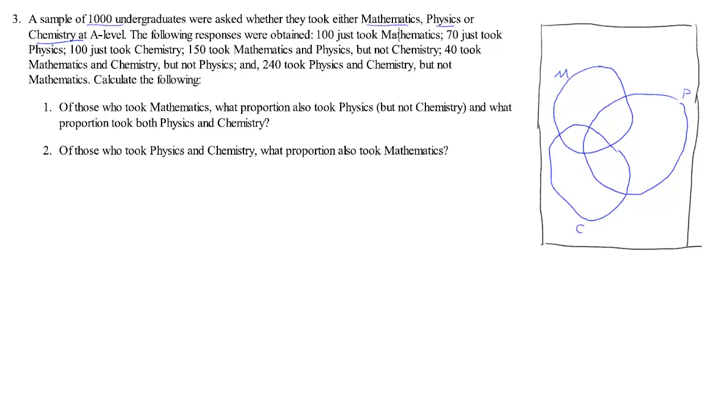And then let's put in a few numbers. So we know overall there were a thousand students and a hundred of those just took maths. The important thing here is that just, that is not a hundred took maths out of a thousand, but a hundred took maths but no physics and no chemistry. So here in our Venn diagram that 100 goes in here. Seventy just took physics. So this is 70. A hundred just took chemistry.